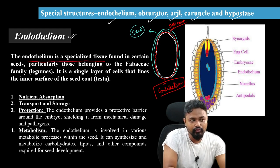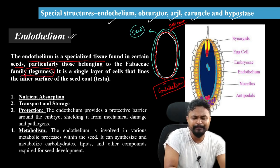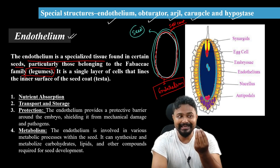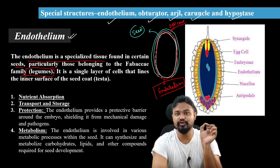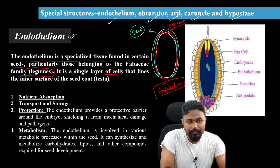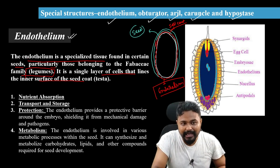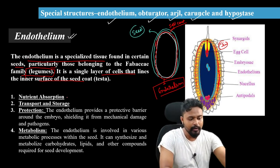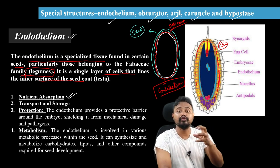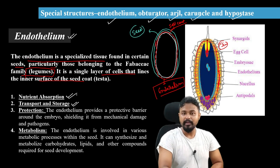The endothelium is a specialized tissue found in certain seeds, particularly those belonging to the Fabaceae family — legumes. It is a single layer of cells that lines the inner surface of the seed coat. The endothelium is present on the inner surface of the seed coat and is important for nutrient absorption, nutrient transport, and storage.